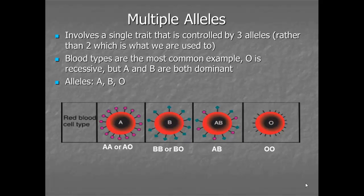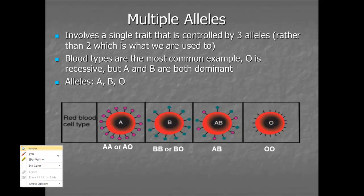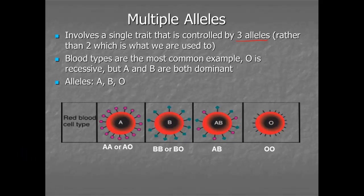Here's another example of genetics problems. We're going to bend the rules slightly. Up to this point, all of the traits that we've studied had one gene, and one gene had two alleles. This example of multiple alleles is still just one gene, one trait, but it's going to be controlled by three alleles. So we're used to having two letters in our problems, maybe a big B and a little b, or a big R and a big W, but in multiple allele problems we will have three.